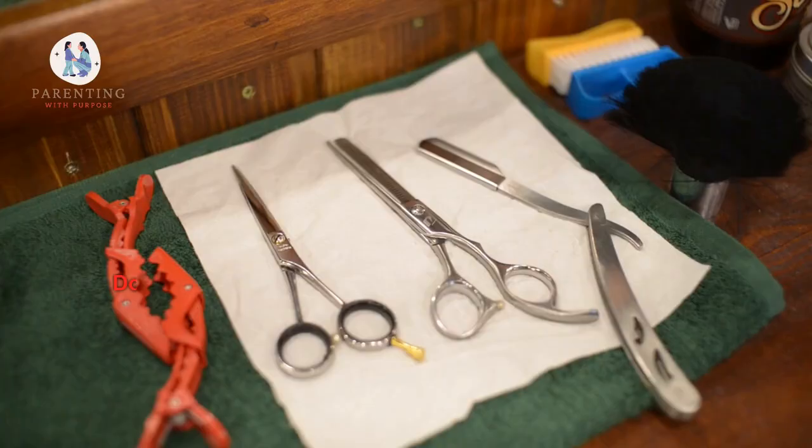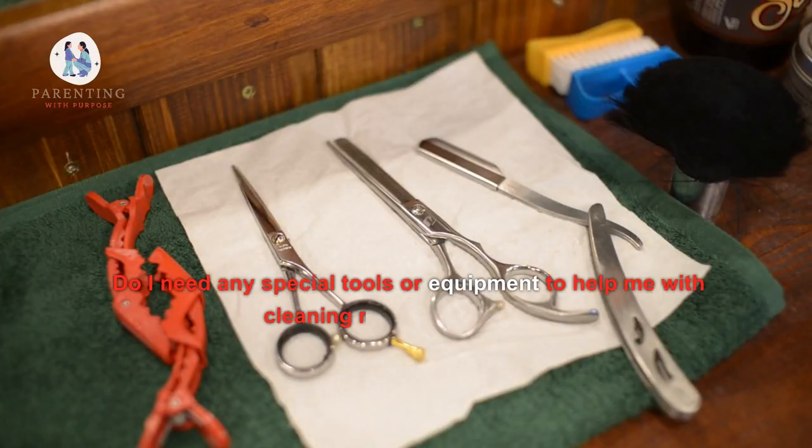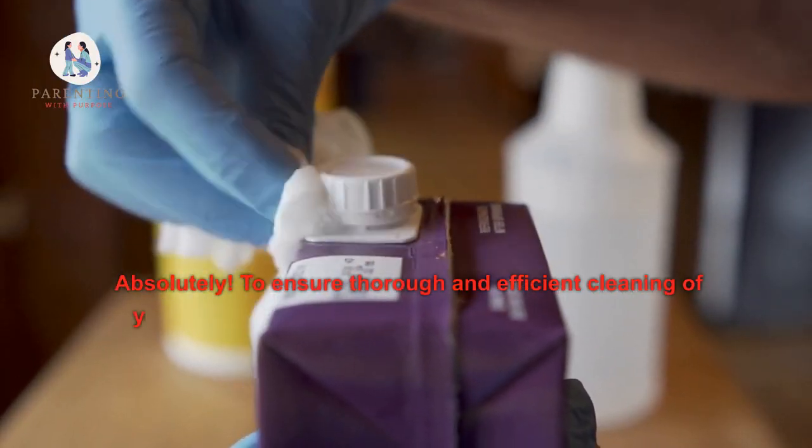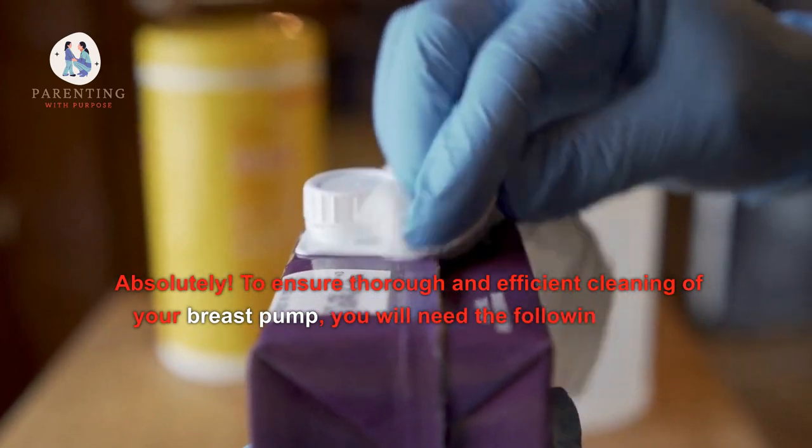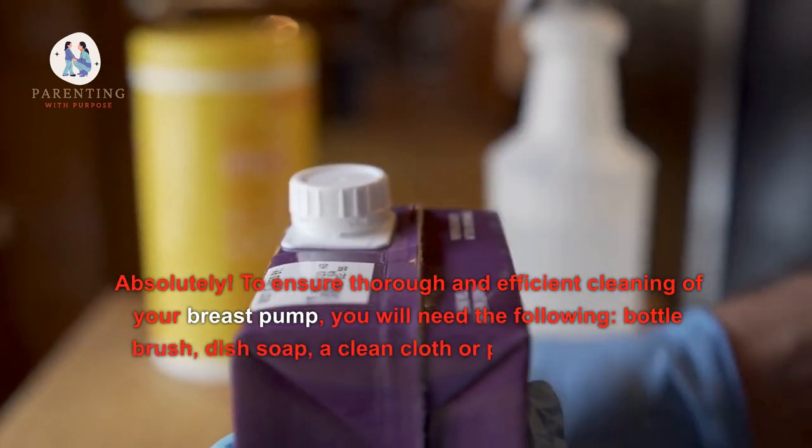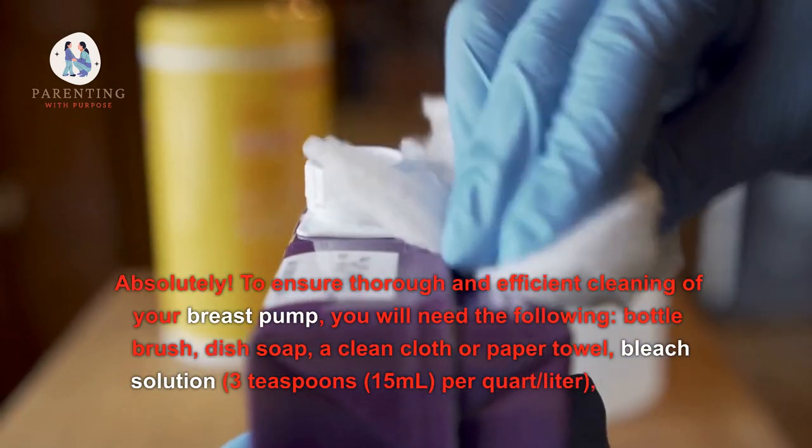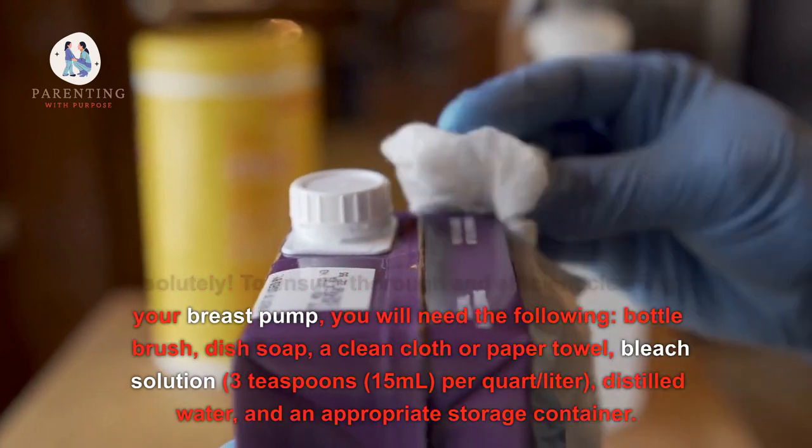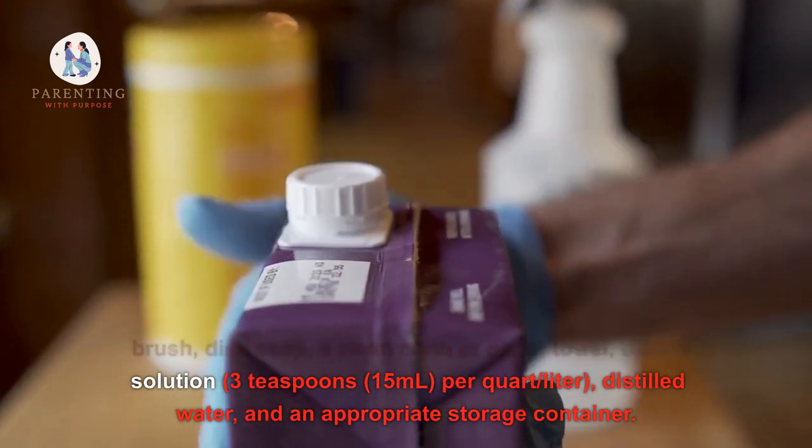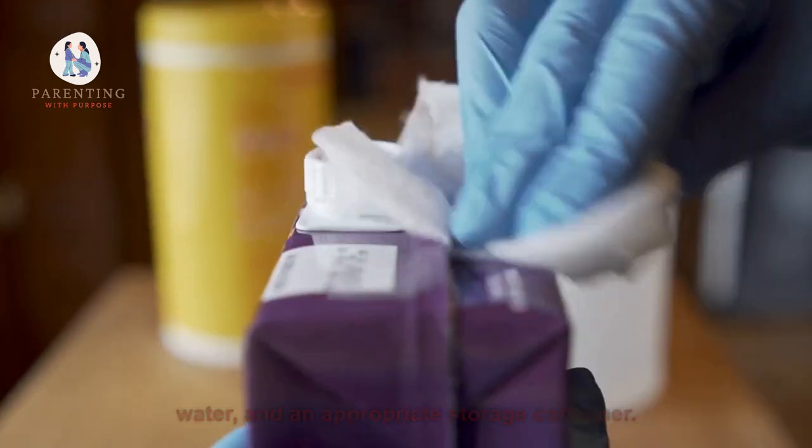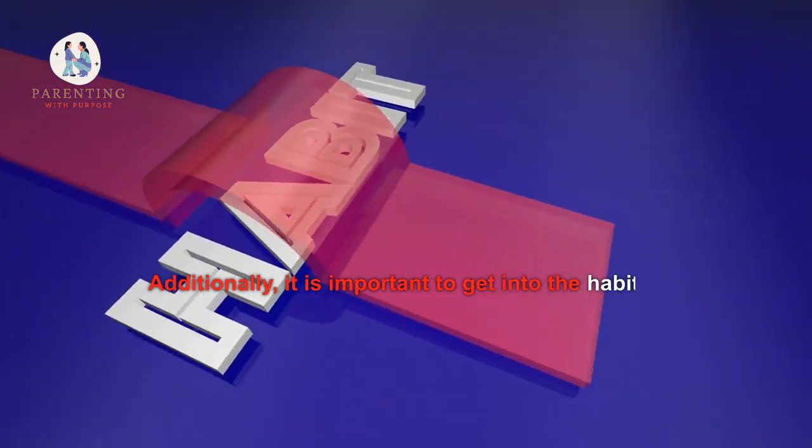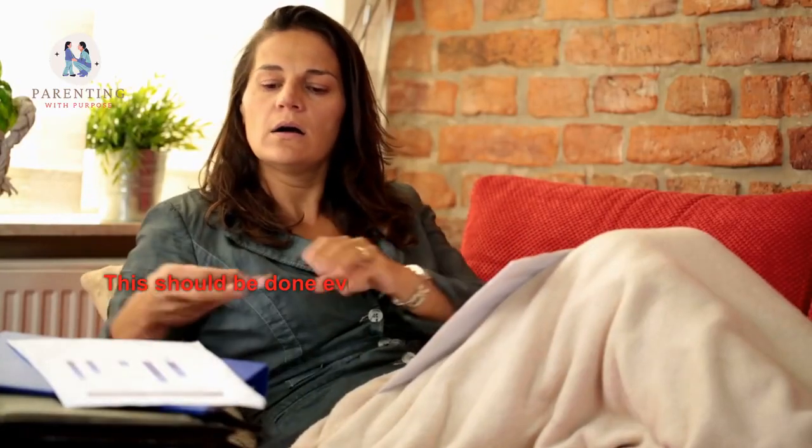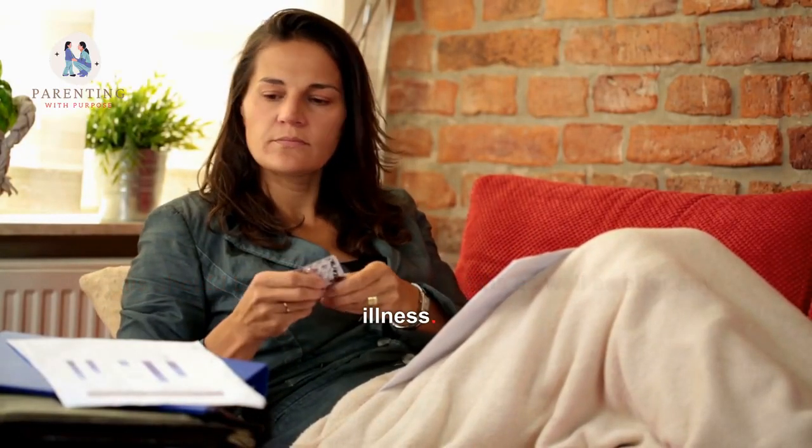5. Do I need any special tools or equipment to help me with cleaning my breast pump? Absolutely! To ensure thorough and efficient cleaning of your breast pump, you will need the following: bottle brush, dish soap, a clean cloth or paper towel, bleach solution (3 teaspoons or 15 milliliters per quart/liter), distilled water, and an appropriate storage container. Additionally, it is important to get into the habit of replacing tubing on a regular basis. This should be done every few months as well as after any illness.